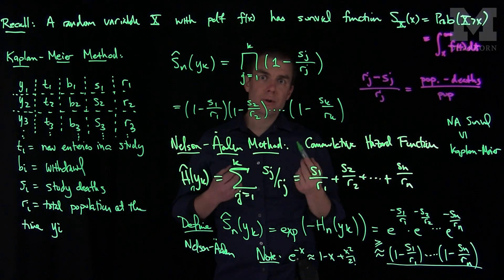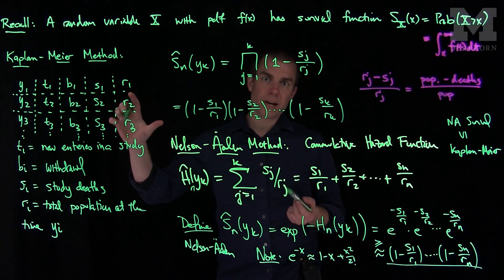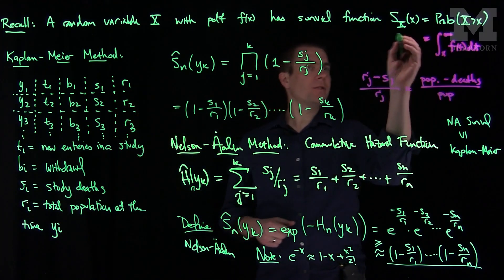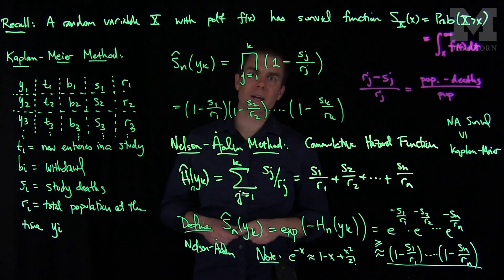So these are two discrete versions of the survival function given from a mortality table of information, and they basically approximate the continuous survival function. Thank you very much.